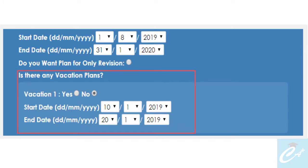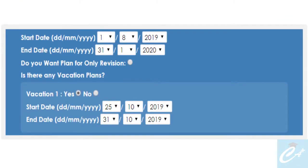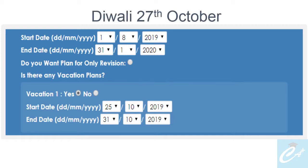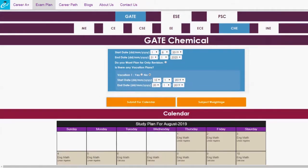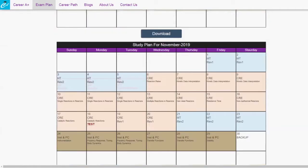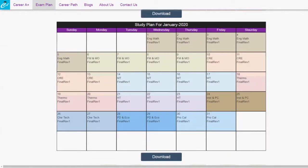The next option is for vacation. If you have any planned vacation — for example, Diwali is on 27th October and you are planning to take time off from studies — you can choose option 'Yes' and then select the start date and end date of your vacation. By default, this option is 'No'; once you click 'Yes', you can edit the dates. Otherwise, this option will be disabled. That's it — click the 'Submit for Calendar' button and you will get the plan. To get a new calendar, you have to refresh the page.